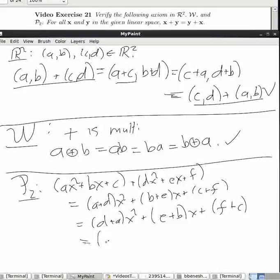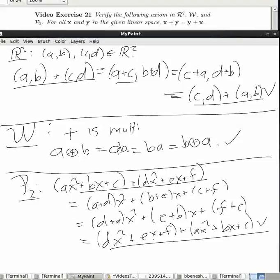That's equal to D X squared plus E X plus F, plus A X squared plus B X plus C. So I've shown that you do it in one order, it's equal to the other order. We're done.